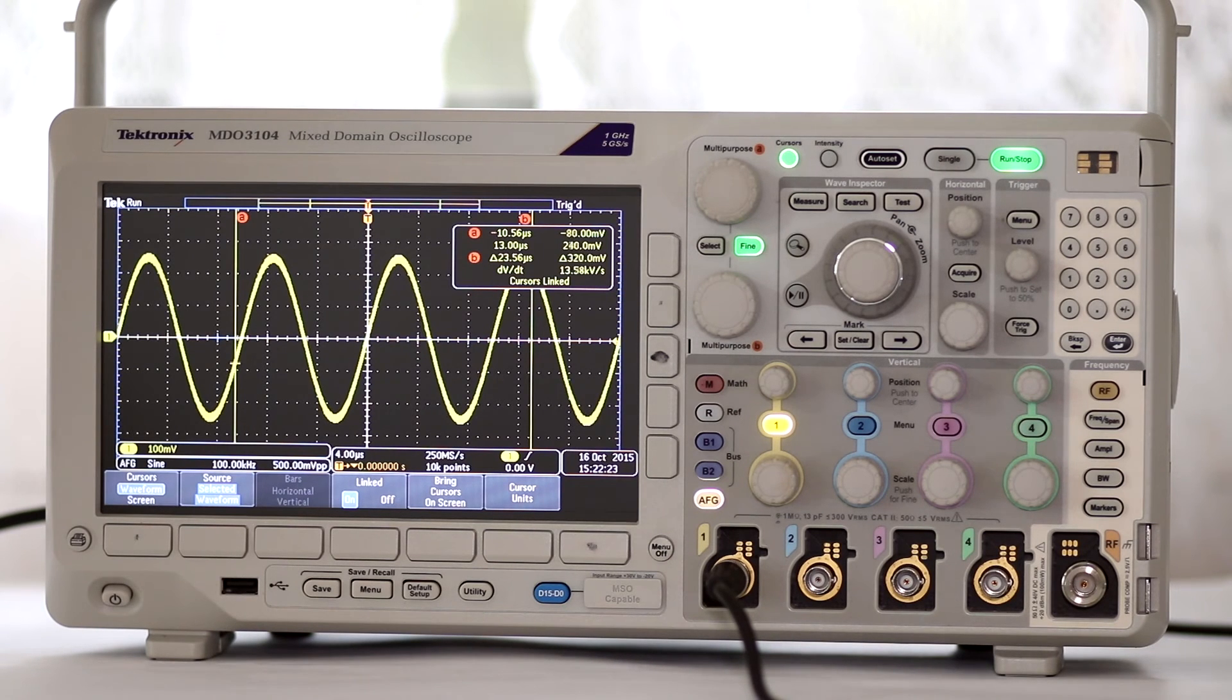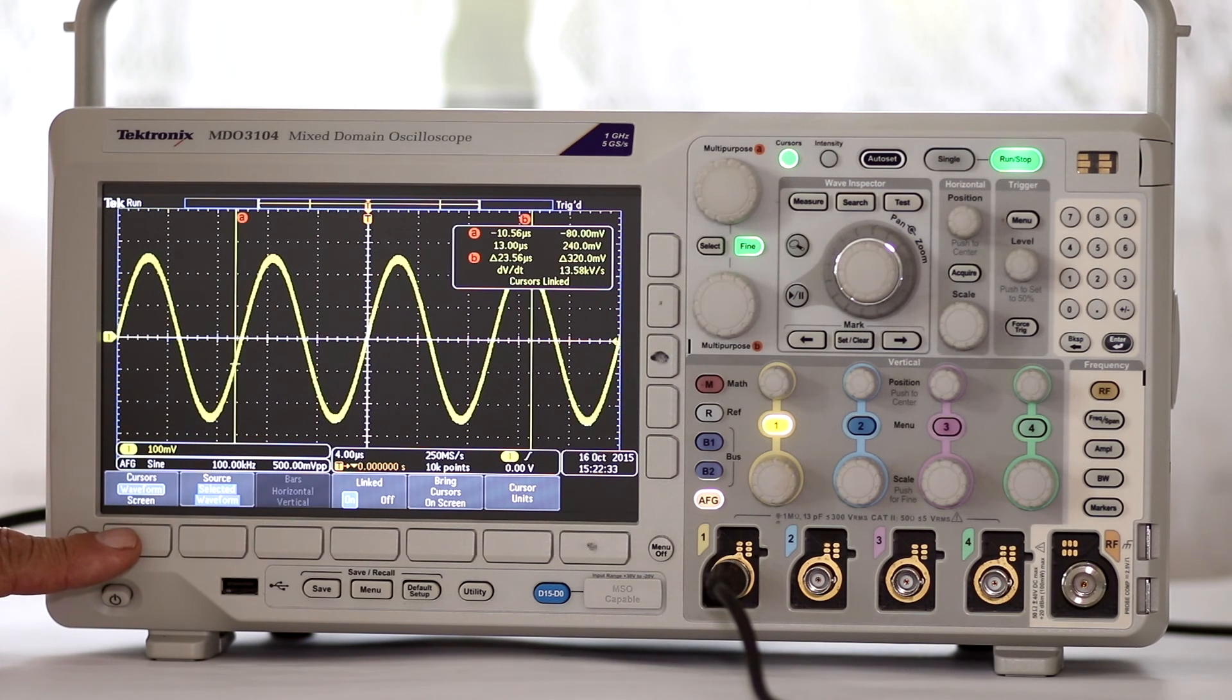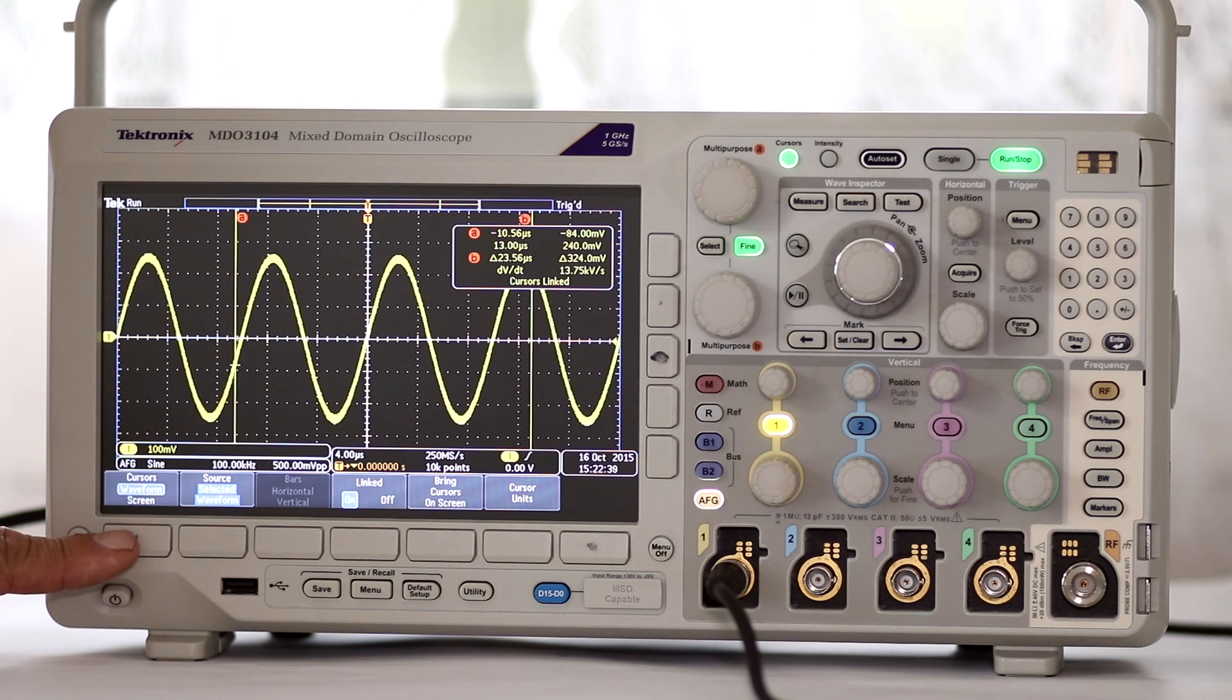Now we'll turn to the lower menu. Press the soft key associated with cursors repeatedly. This toggles between waveform and screen. So far, we've been in the waveform mode. In screen mode, both vertical and horizontal cursors are shown in the display.